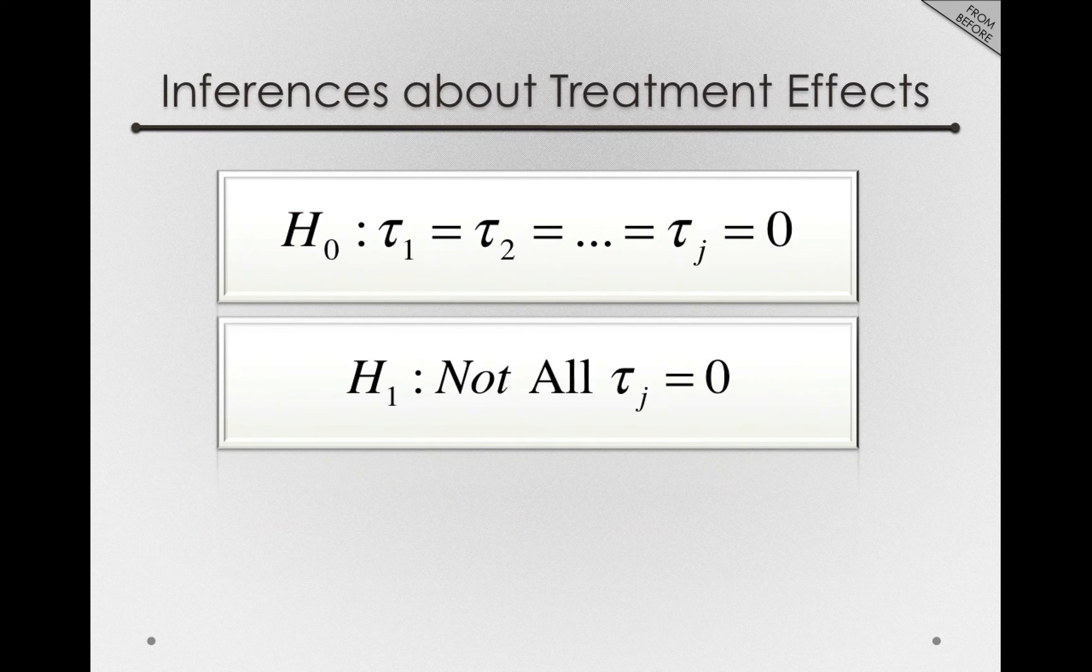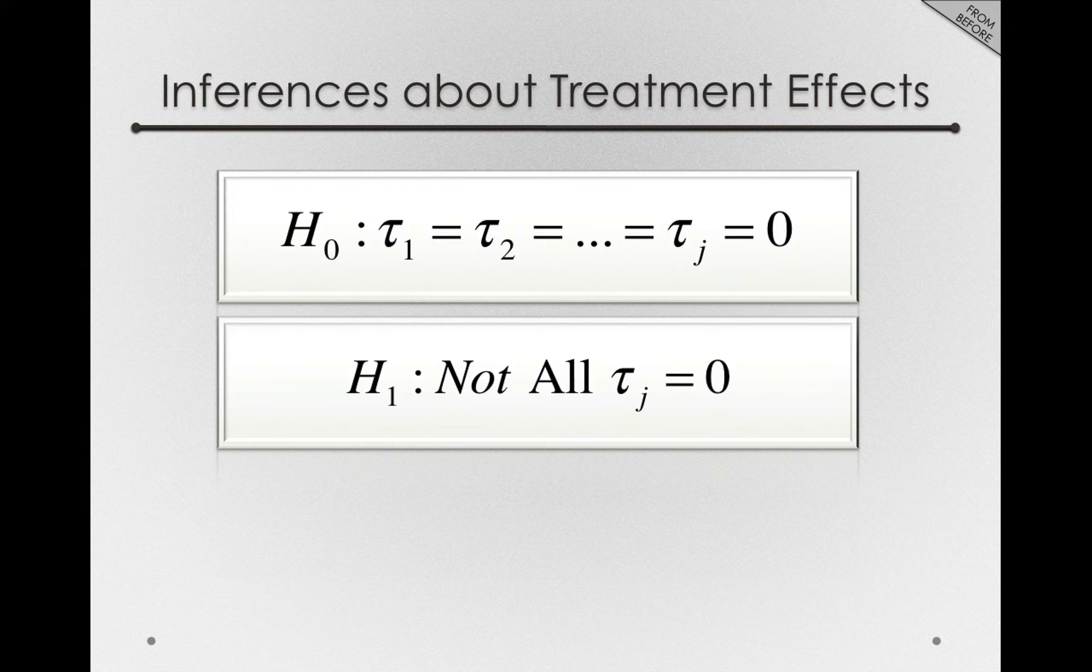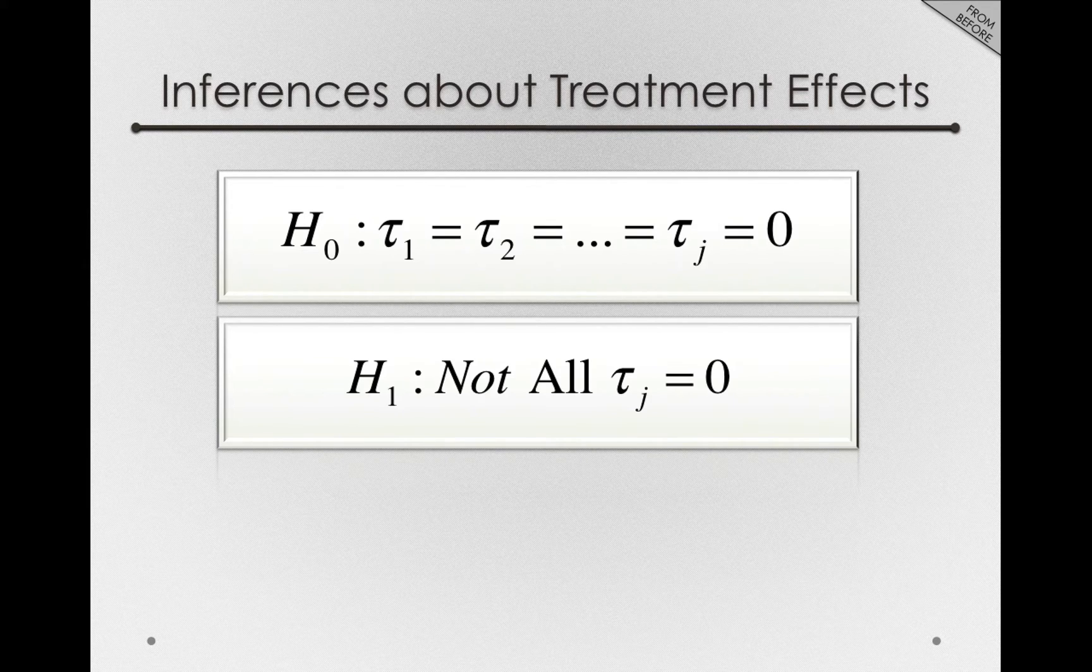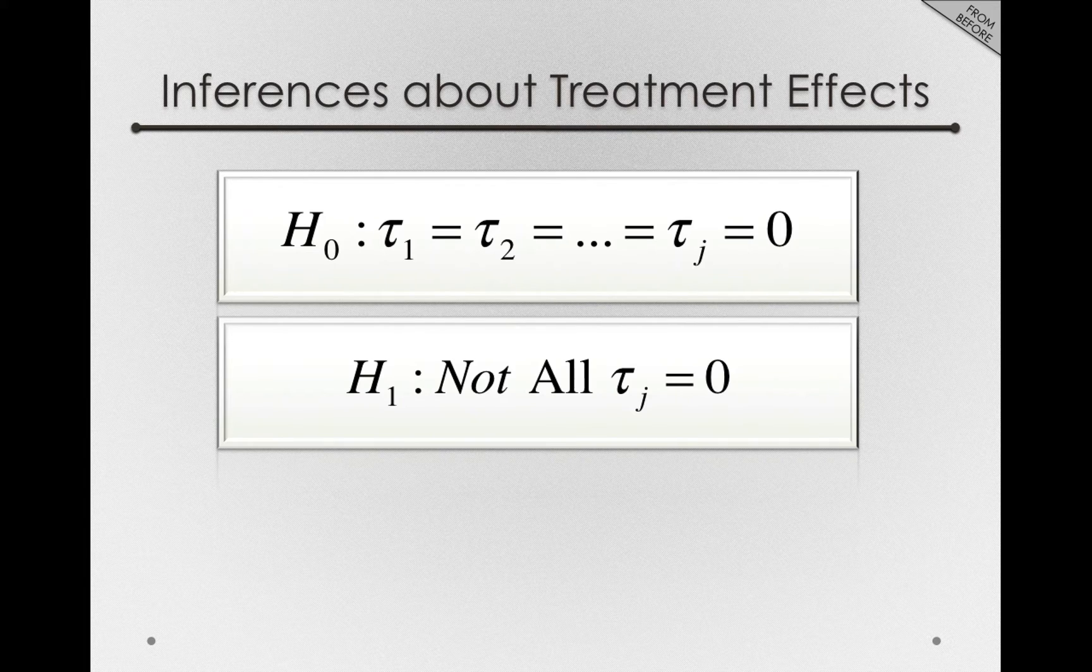Our inferences about treatment effects are really about those tau's in the population, and we left off with the insight that we can develop a null hypothesis that all of those tau sub j's, tau 1 through j, are actually zero in the population. We'll be able to test this null hypothesis with the statistical methods we're about to talk about.